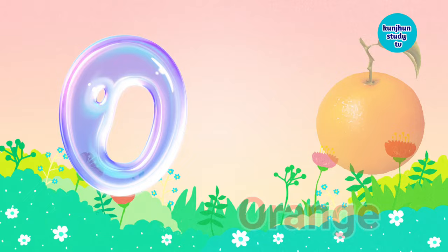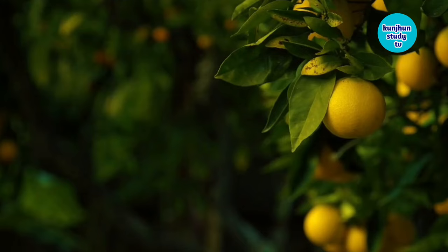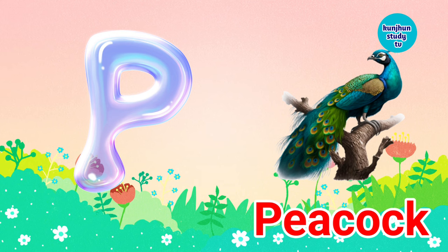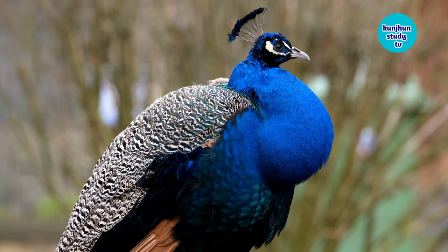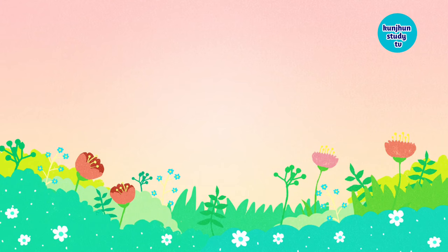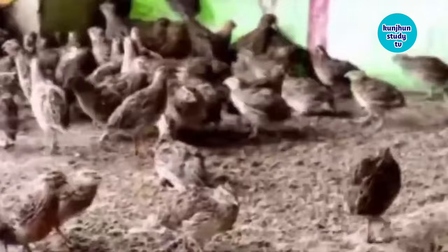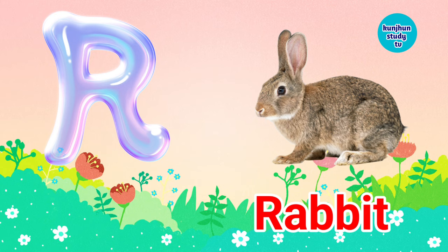P, P for Peacock, Peacock means Mor. Q, Q for Quail, Quail means Bater. R, R for Rabbit, Rabbit means Khargosh.